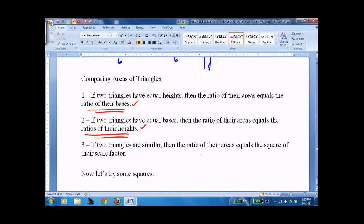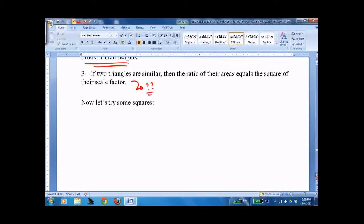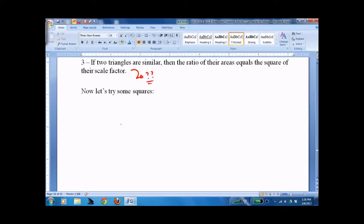If two triangles are similar, then the ratio of their areas equals the square of their scale factor. When we multiply both the base and the height by 2, we're going to multiply the area by 4. It works with triangles, but it's easier to see with squares.